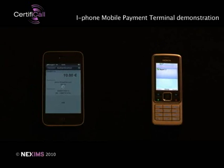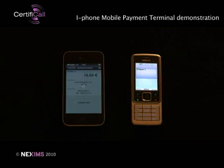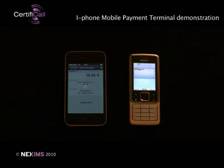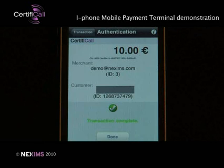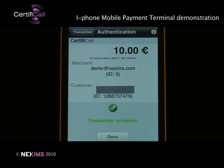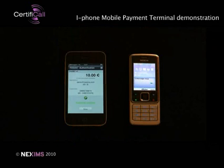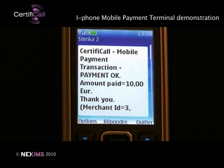To validate the transaction, simply place both mobile phones face-to-face. As soon as the audio one-time password has been verified between the two mobile phones, the payment is confirmed and the transaction is complete. The merchant's iPhone shows a detailed transaction screen, and the customer's mobile phone receives a message with the same transaction information.